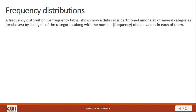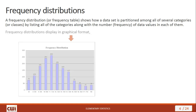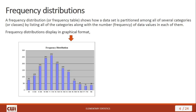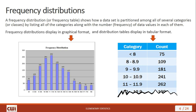Frequency distributions are also called frequency tables. Either way, they show us how a data set is partitioned among all of several categories, or what's called classes. You list the category, and then for each category you list a number that tells you the frequency of the data value in that category. You can display this in a graphical format or a tabular format — you're communicating the same basic information, but the graphical format has some advantages over the tabular format.